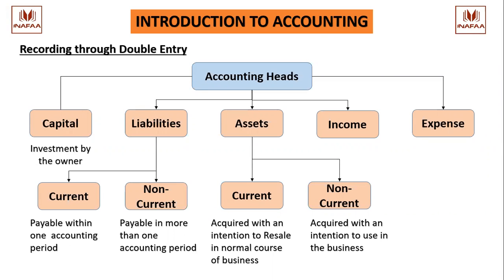These are the five accounting heads which we discussed - that every transaction falls into these accounting heads. Number one is capital, second is liability, asset, income, and expense. These are the five accounting heads. Every transaction falls into any one or more of the accounting heads. What we have to do is identify which accounting head the transaction relates to.